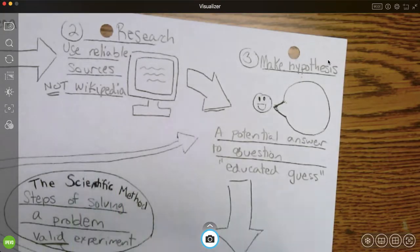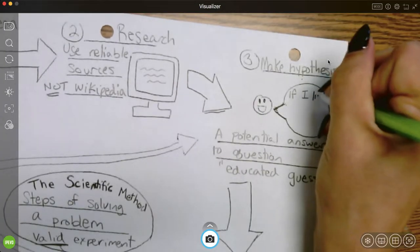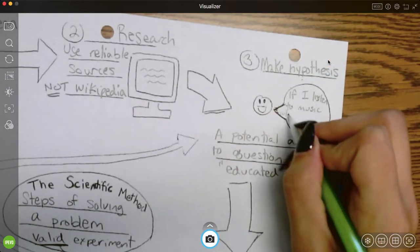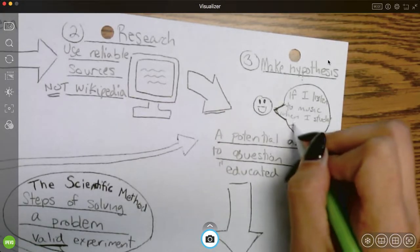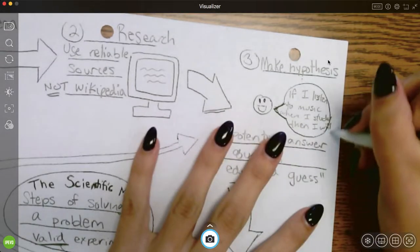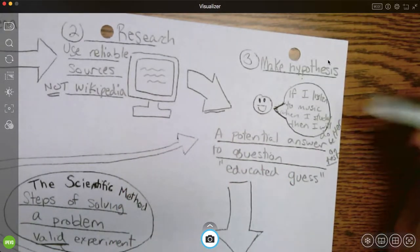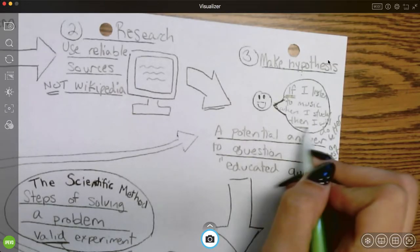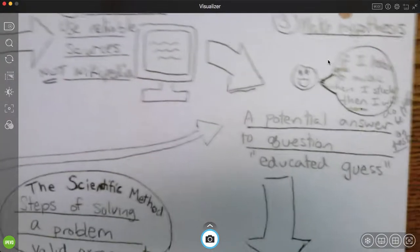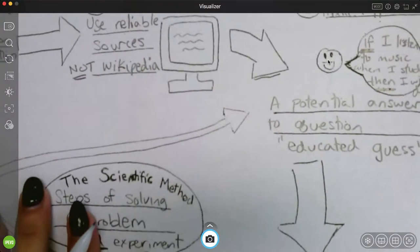So if our research says that music helps when you study, maybe I can make my hypothesis. If I listen to music when I study, then I will do better on tests. I know that's outside the bubble. But my hypothesis has an if-then format. If I change something, then something else will happen. So if-then is what most hypotheses are going to be like. If I change something, then something else will happen.